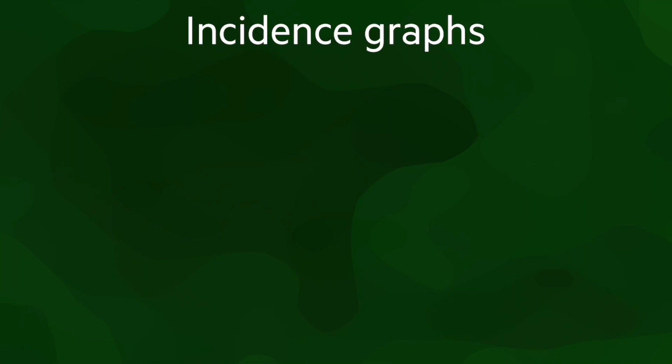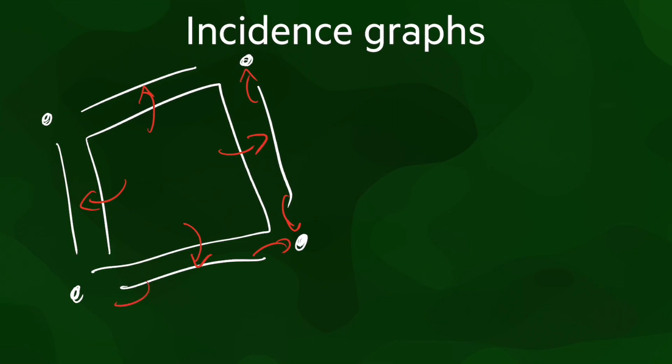Finally, in an incidence graph, we have separate data structures for polygons, for edges, and for vertices. Each polygon stores links to the edges that bound it, and each edge to the two vertices that bound it. So, an implementation would look something like this.